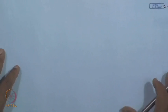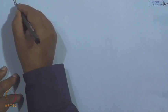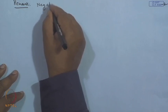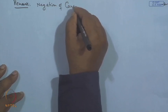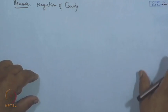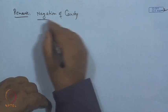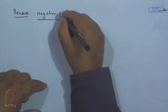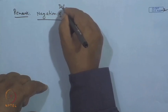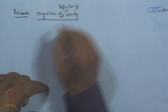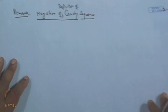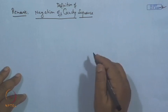Now, what is the negation of the Cauchy sequence? This will be required. The negation of the definition of Cauchy sequence is as follows.